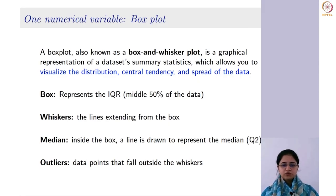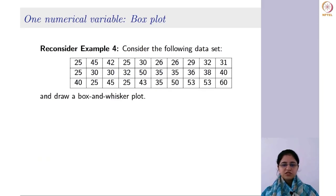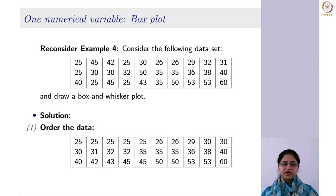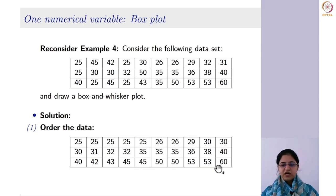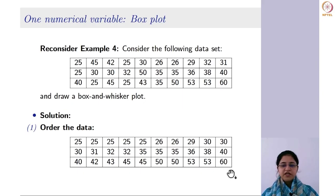Let us see how to draw this. If you consider the same example of the age dataset that we had for the histogram and you want to draw a box plot for that same data, then first of all you need to order the dataset — arrange it in ascending order. We have arranged it in ascending order now, starting from 25 and going up to 60. Once you have ordered the dataset, the next thing to identify is the median.